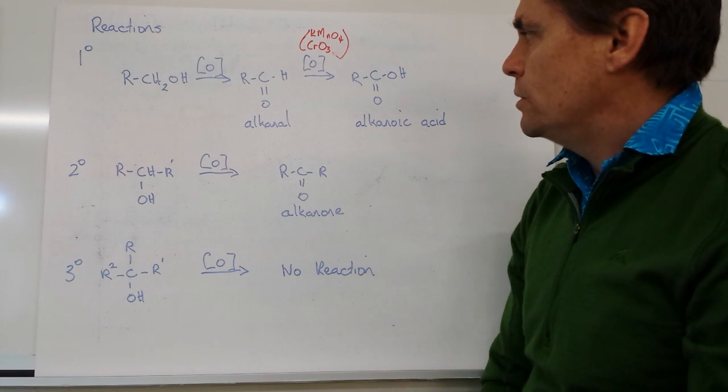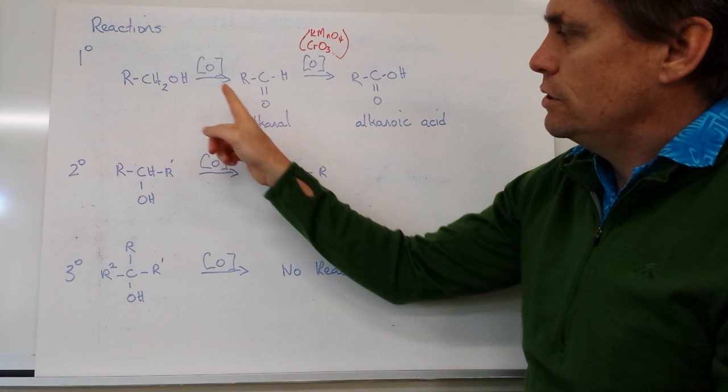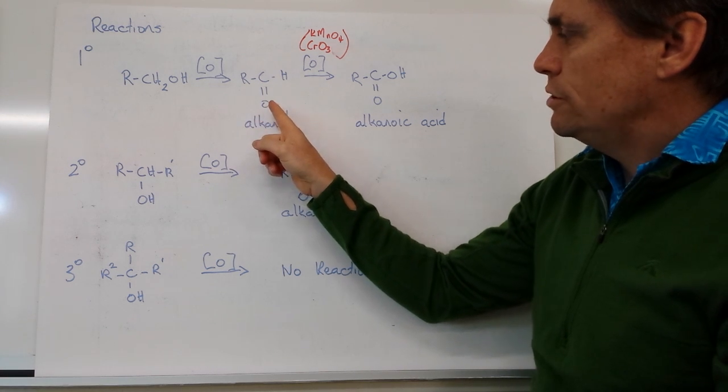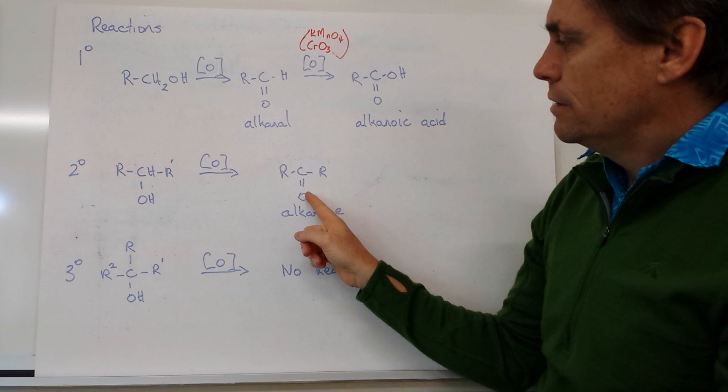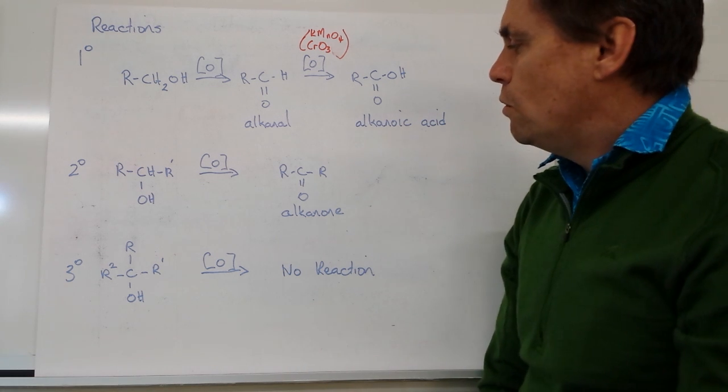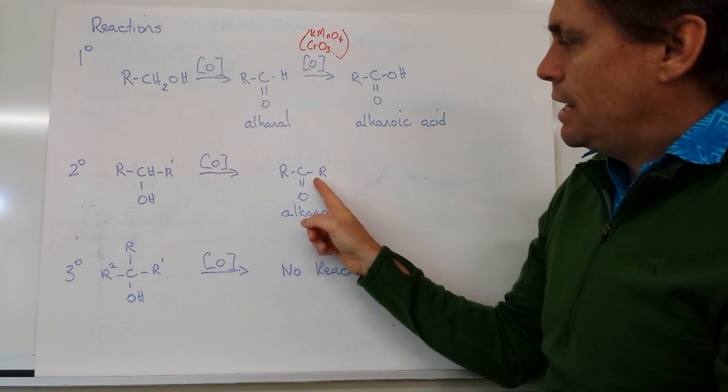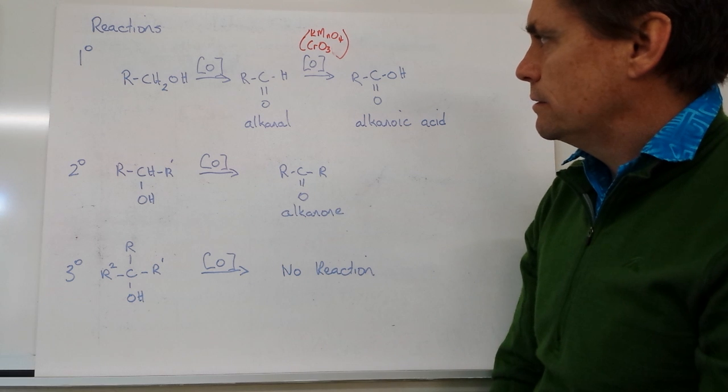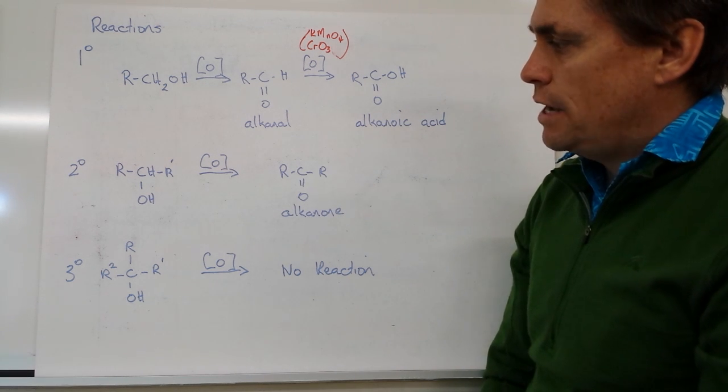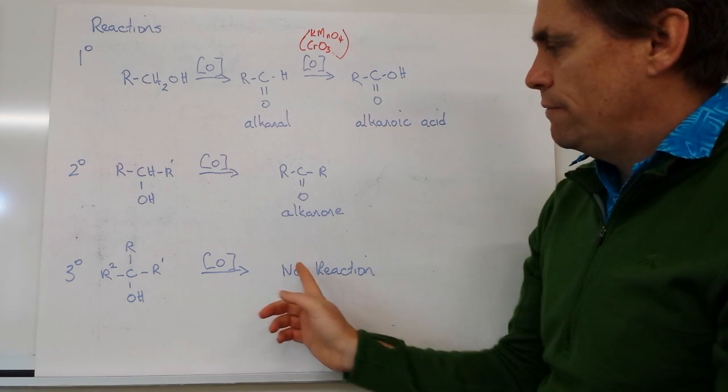Our secondary alcohol, on the other hand, if we oxidize it using an oxidizing agent just as we did in the first one, will produce not a terminal carbon-oxygen double bond but an intermediate carbon-oxygen double bond. So we don't produce what's called an alkanal, instead we produce what's called an alkanone or better known as a ketone. Now we can't oxidize this one any further, so that's our final product. Our first reaction we could oxidize the alkanal to give us the alkanoic acid. Now our tertiary alcohol, on the other hand, if we try to oxidize it using the same process, we find that we don't get any reaction.